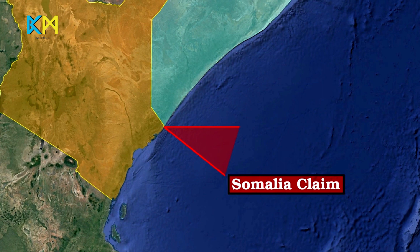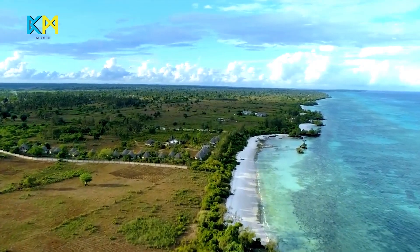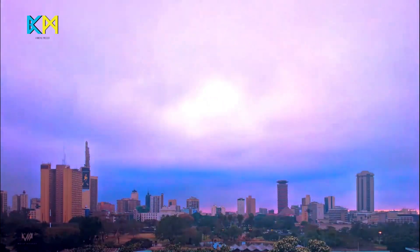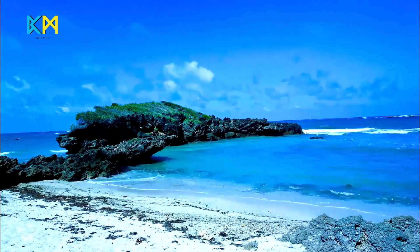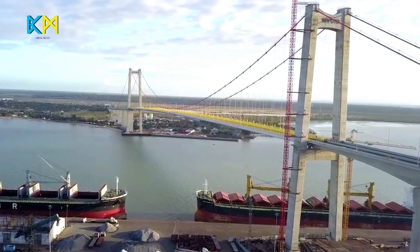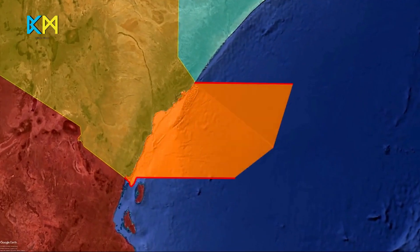An equidistant line is a line that has points from designated base points in each country's shoreline, meaning the ocean is split based on coastal features. Kenya's claims are based on several factors, with the main ones being a 1979 proclamation and two bilateral agreements it signed with Tanzania in 1976 and 2009. In 1979, former Kenyan President Daniel Moi made a proclamation of the border and all the resources that lie within it. Kenya's agreement with Tanzania follows a parallel line which places Pemba Island in Tanzanian territory, and Tanzania and Mozambique have a similar border.